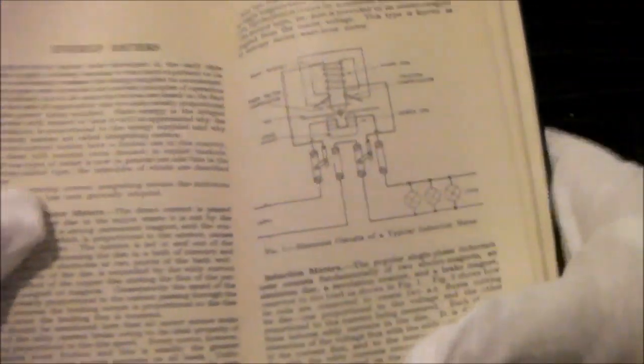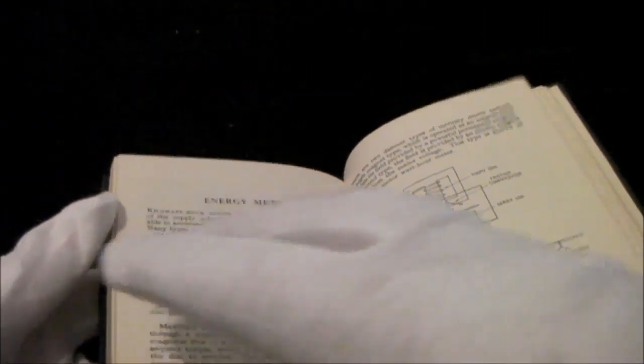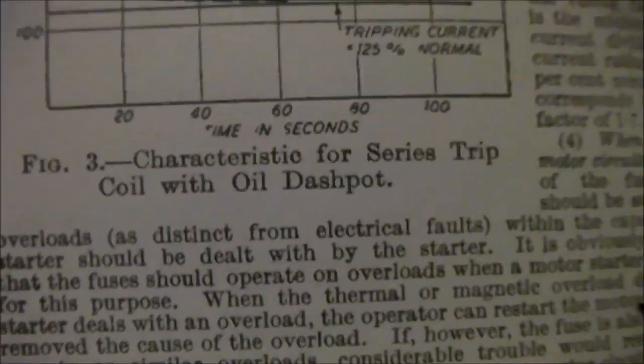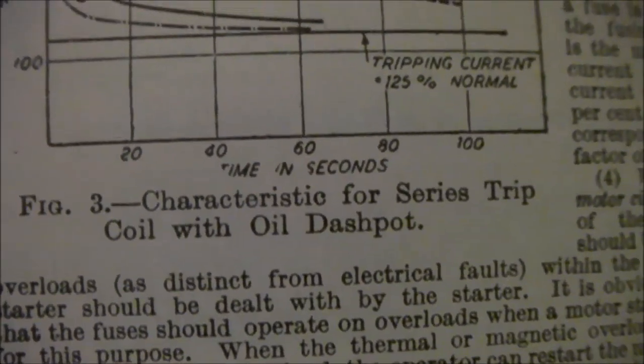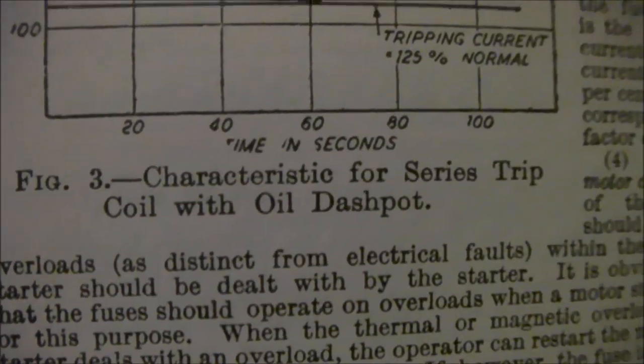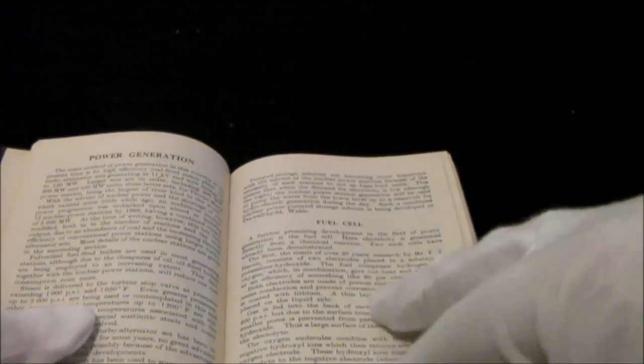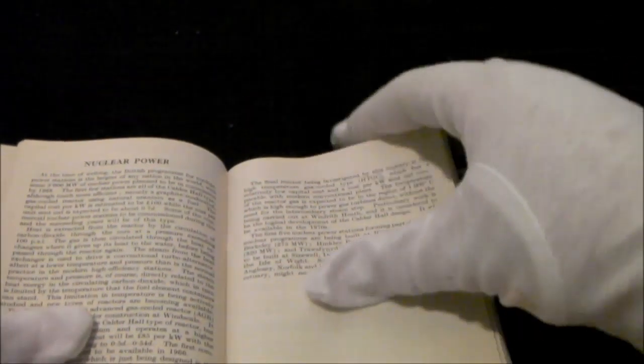Anyway, it's got energy meters. Let's see if I can flick through and find something which is really high-frequency heating. What's that? Characteristic for series trip coil with oil dash pot. Now that does sound like a YouTube show in itself. Welcome to Characteristic for series trip coil with oil dash pot. Hello, I'm oil dash pot, I've got a silly name. Yes, you have. Power generation, fuel cell, nuclear power blows you up. Very dangerous, if you didn't know already.